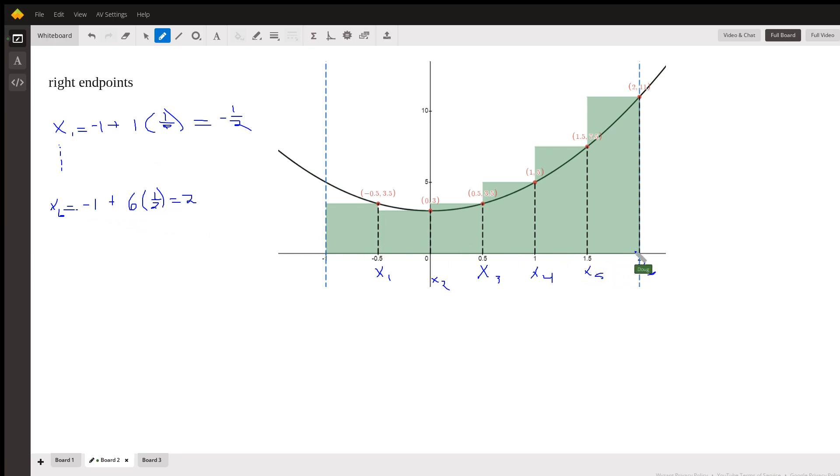Similarly, you could come up with a formula for x_n. It's negative one plus n of these sub-intervals, so negative one plus n over two.